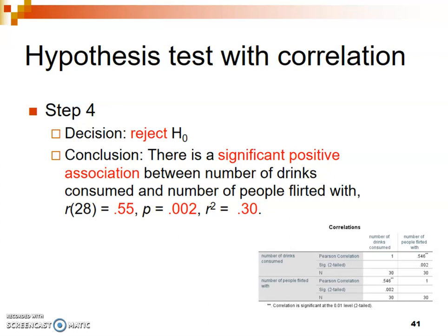Our n was 30. Either approach — reporting degrees of freedom or n — is acceptable. I went the degrees of freedom route, which was covered in step two. There are the degrees of freedom in parentheses, and our calculated value for R was 0.55 — rounded to two decimal places from 0.546.